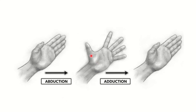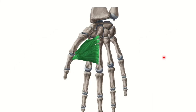Here we can see this is the abduction — the abduction of the thumb, or separation of the thumb, is known as abduction. Then we can see the closeness of the thumb with other fingers — this is the adduction. So in this picture we can see abduction and adduction of the thumb.